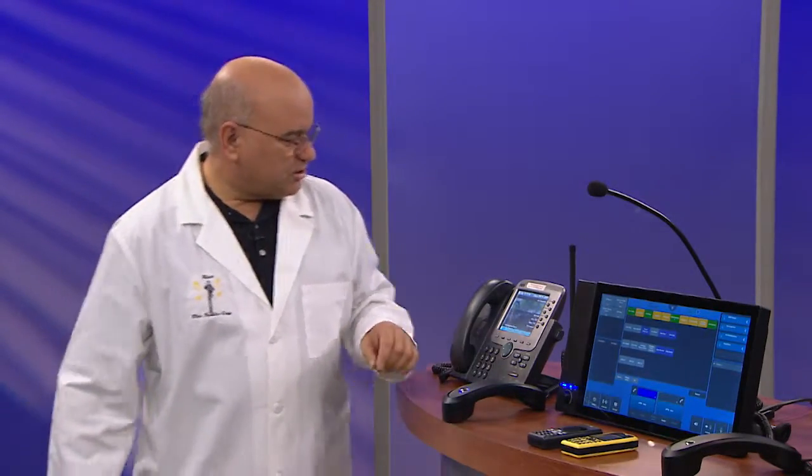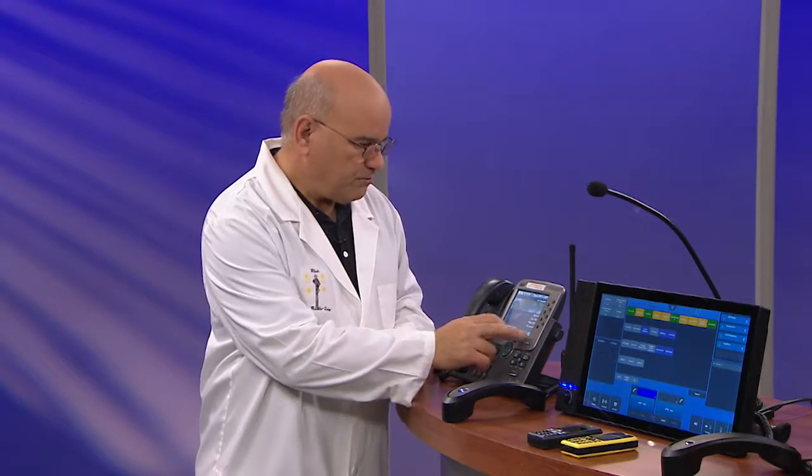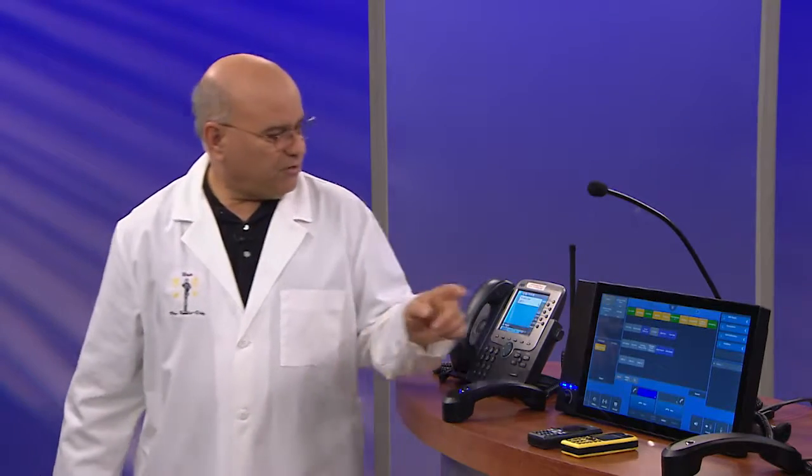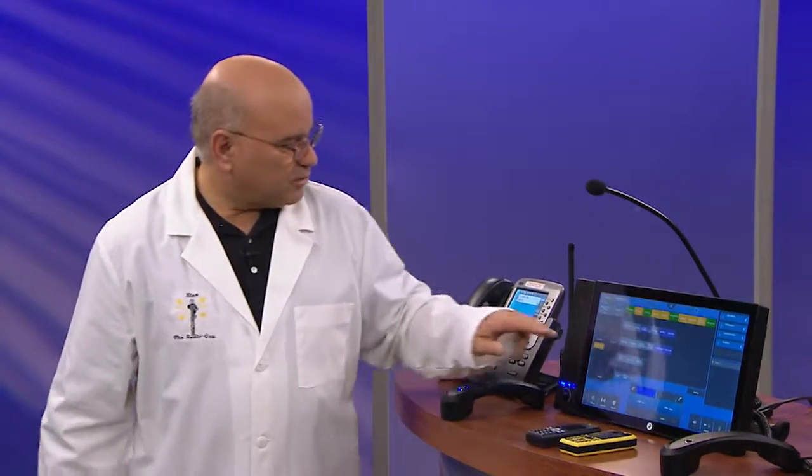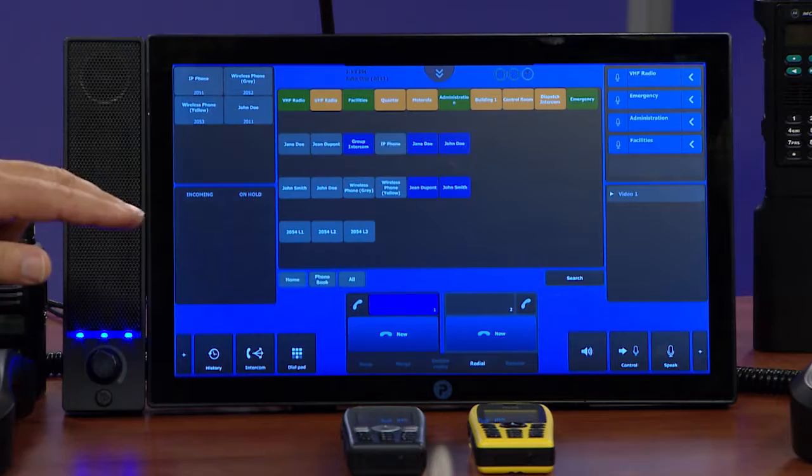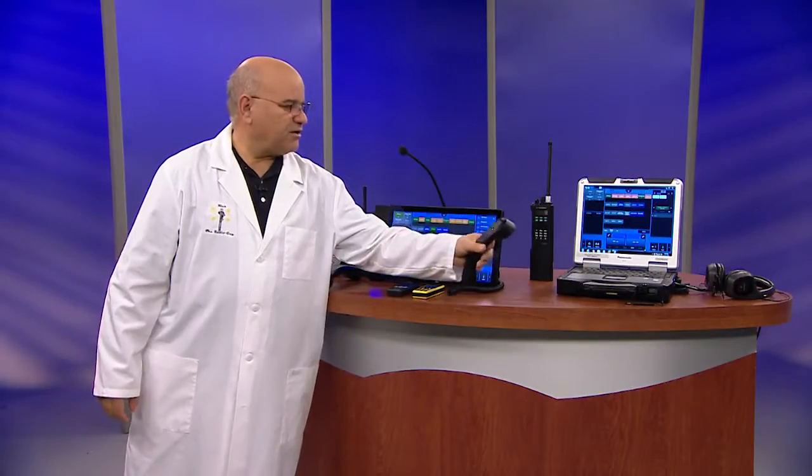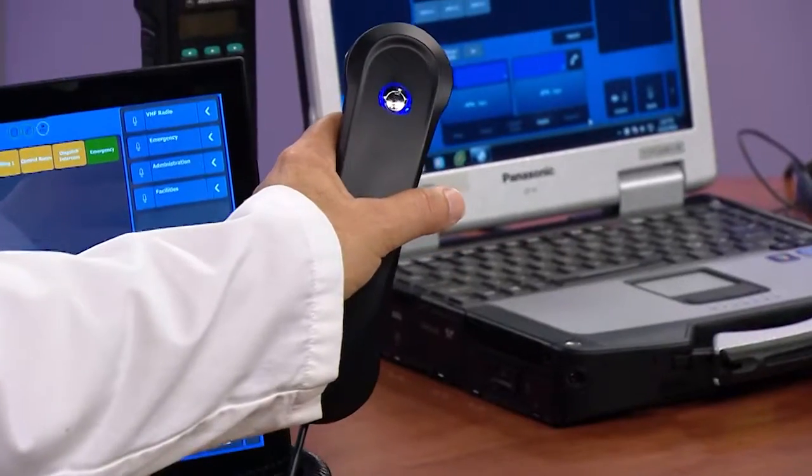Let me quickly show you some phone features here. I'll come over here and hit my IP command button on my standard Cisco phone. You see it come into the incoming queue. I'm going to answer it. It's going to go over here to the handset.